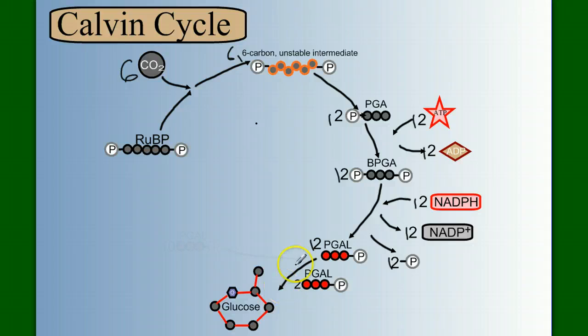And two of them go to make a sugar, which leaves us with 10. Yes, 10 PGALs left. So we still have something to build off our cycle. So what do we do with these 10 PGALs?